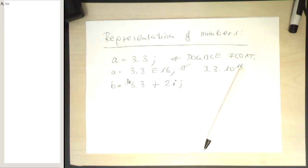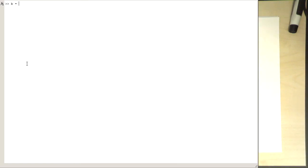Let's try this out. b equals 3.3 plus 2i semicolon. So now we see we've got our real part here and our imaginary part here.